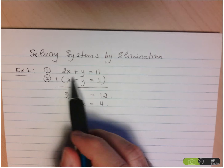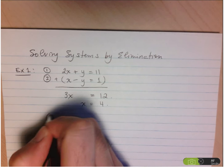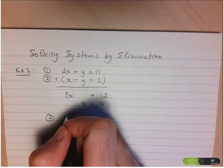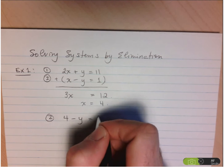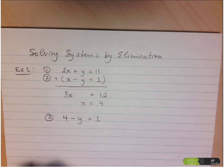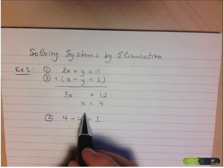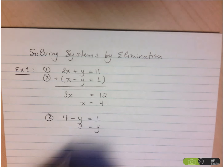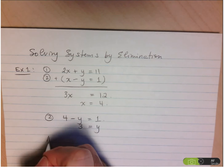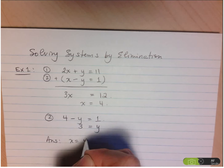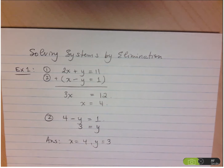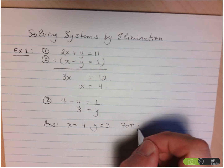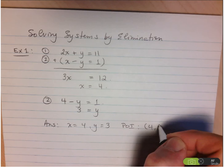Equation 2 looks like it might be a little easier. So we'll take equation 2: instead of writing x minus y, I can substitute x by 4. So 4 minus y equals 1. Moving the negative y to the right side and the 1 to the left side, 4 minus 1 is 3. So y equals 3. We have x equals 4, y equals 3, or in coordinate form, the point of intersection is (4, 3).